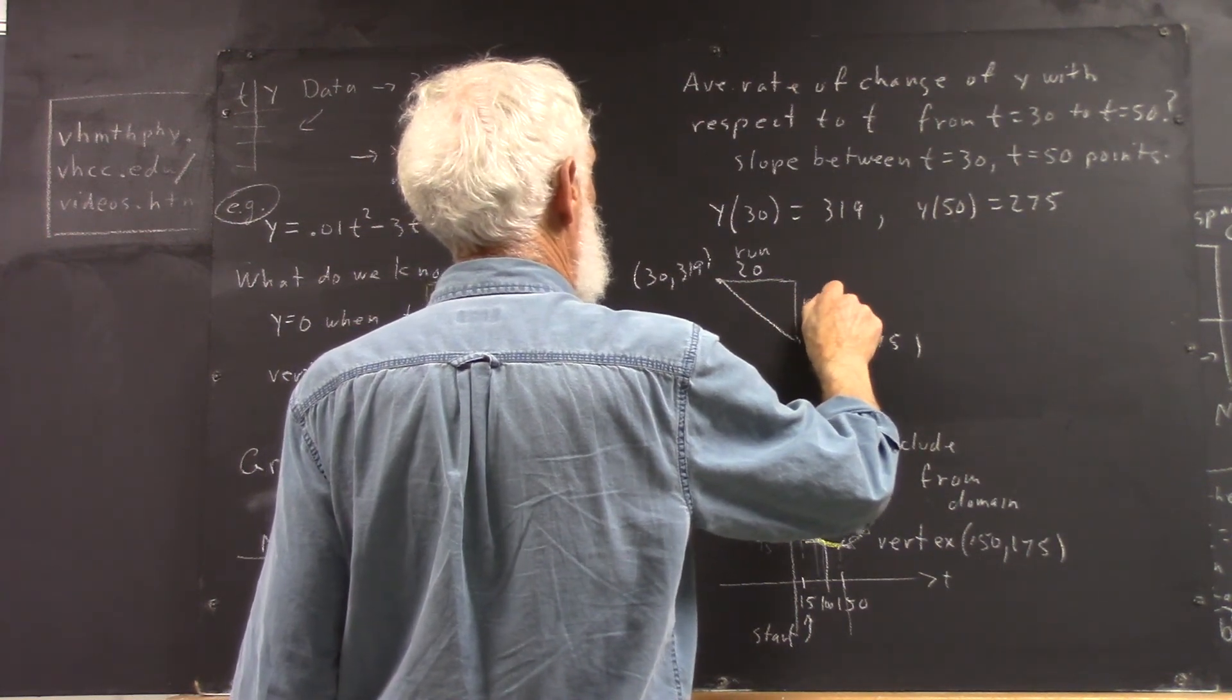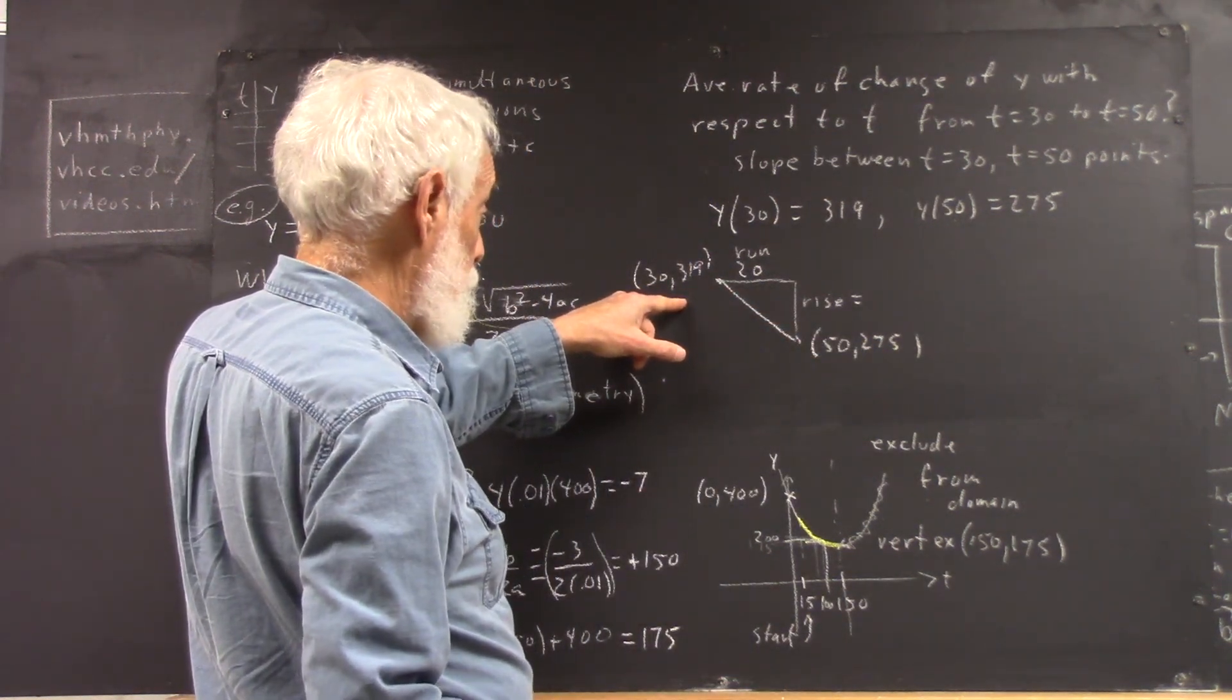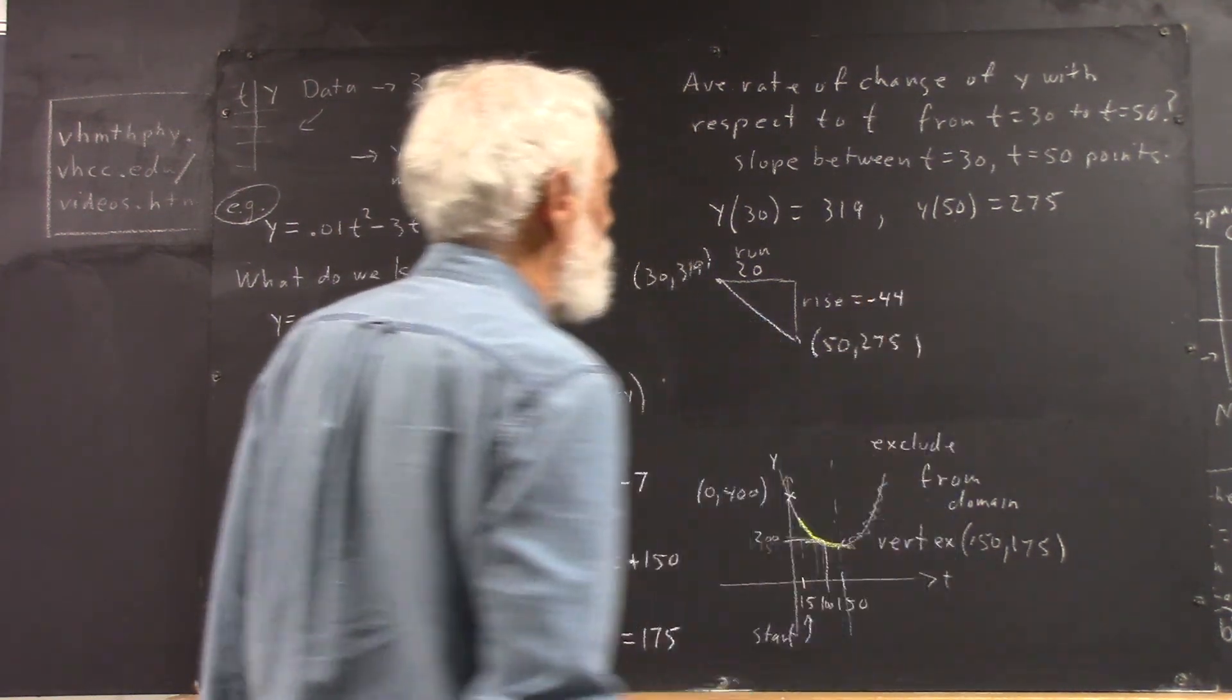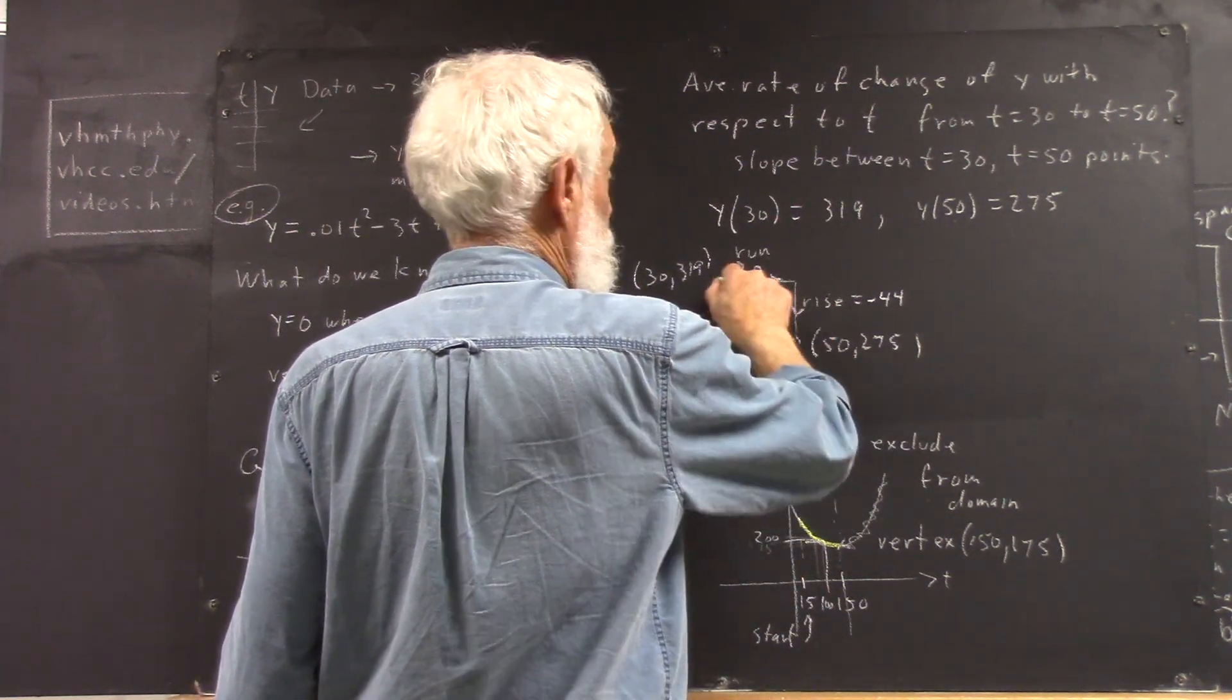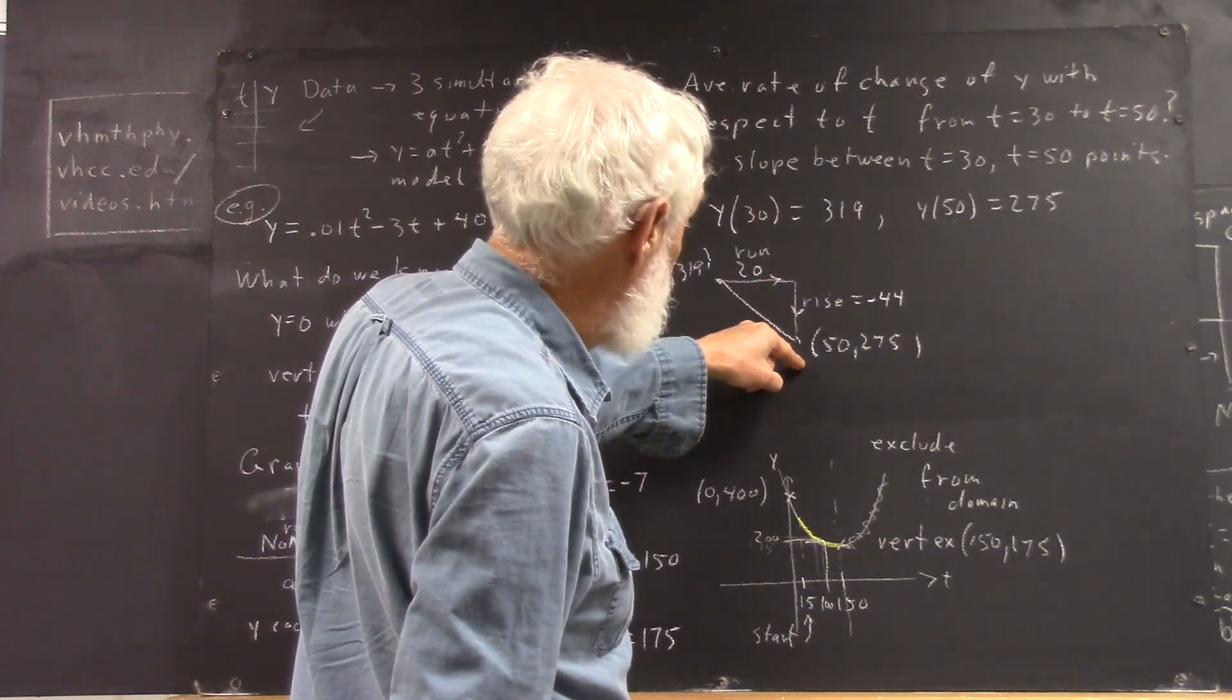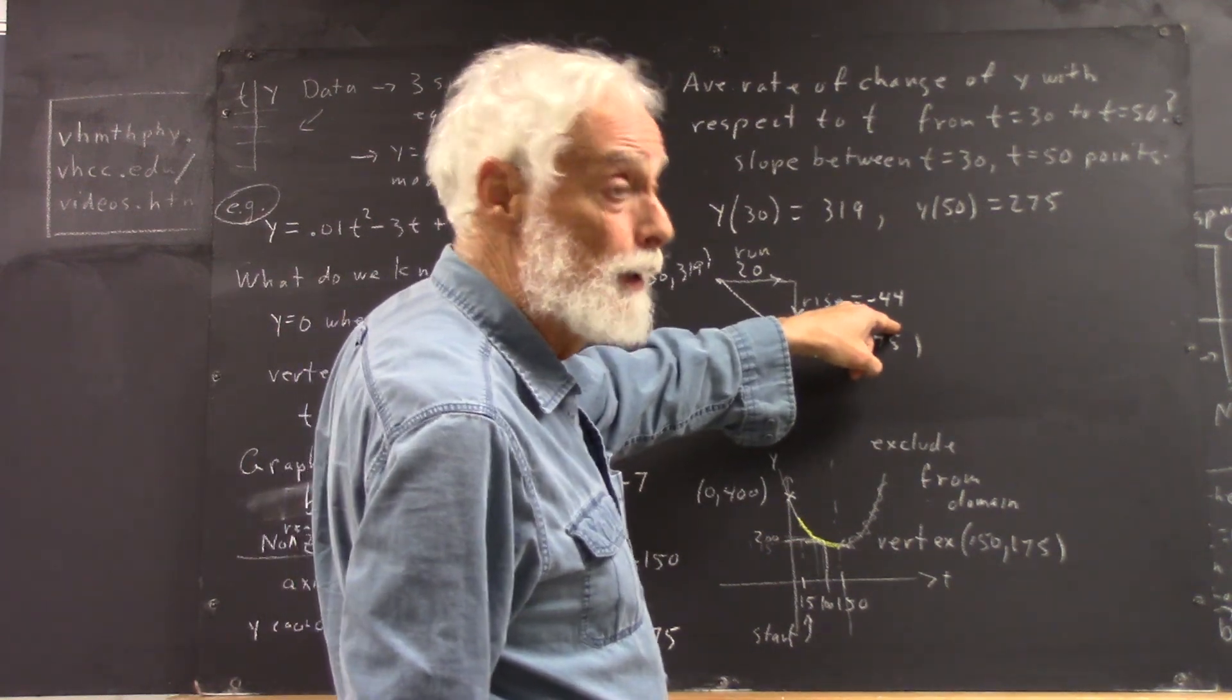And our rise is 275 minus 319. And that is what? That's 50 less 6, 44, minus 44. Because, of course, we see that our run, if we go in this direction, is positive. Our rise, then, is negative. To get from this point to this point, we go this way and this way. And, of course, if we just subtract, 50 minus 30 gives us 20. Okay, 275 minus 319 gives us a negative 44.